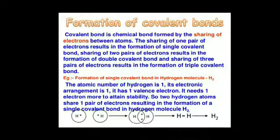The bond formed by sharing of electrons is known as a covalent bond. The sharing of one pair of electrons results in the formation of a single covalent bond. Sharing of two pairs of electrons results in the formation of a double covalent bond, and sharing of three pairs of electrons results in the formation of a triple covalent bond.